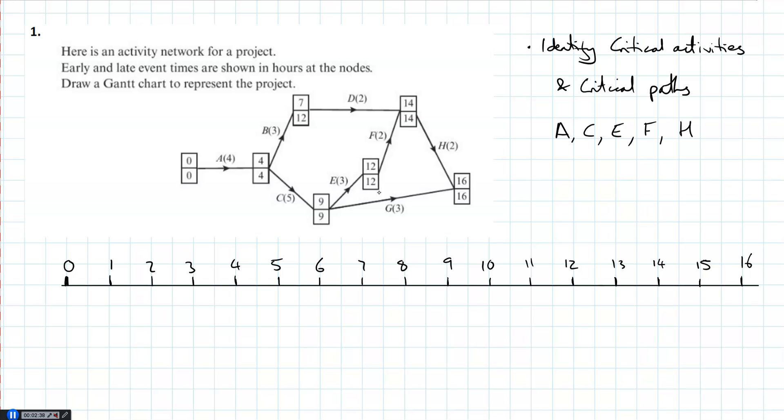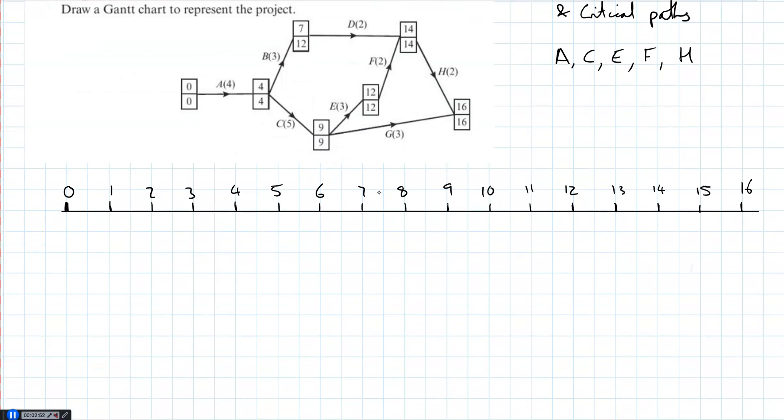So they're my critical activities. And that is actually a critical path: A, C, E, F, H. That's the only critical path in this network. So we're going to put that on first. Critical paths get their own line on our diagram.